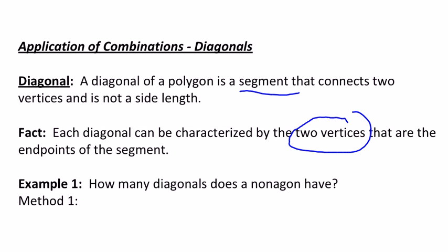So the question is, how many diagonals does a nonagon have? Now you may need to know what a nonagon is, and it may be worthwhile to learn the names of the different polygons, but a nonagon just has nine sides, which means it also has nine vertices.